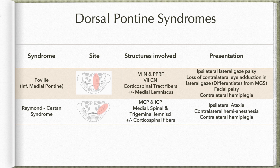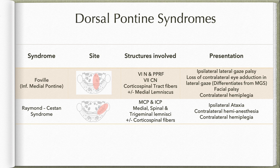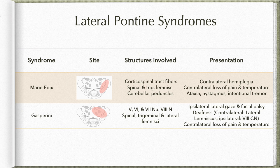Foville syndrome, also known as inferior medial pontine syndrome, involves the seventh nerve, sixth nerve, and corticospinal tract fibers, with or without involvement of the medial lemniscus. Its features almost resemble Millard-Gubler syndrome, except here the nuclei are involved rather than the nerves. An additional feature is that along with the abducens nucleus, the pontine paramedian reticular formation — the lateral horizontal gaze center — is also involved. Therefore, not only does the patient have lateral gaze palsy on the affected side, but the other eye is also unable to adduct, and the patient cannot look voluntarily to the side of the lesion. This is how Foville syndrome is differentiated from Millard-Gubler syndrome.